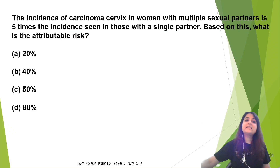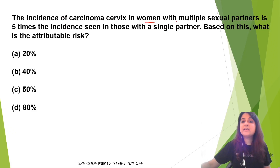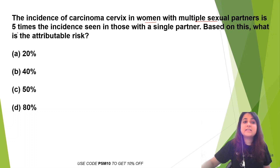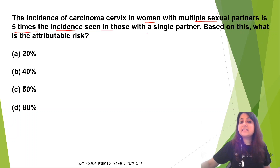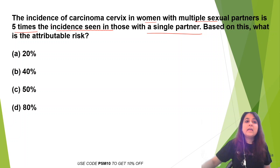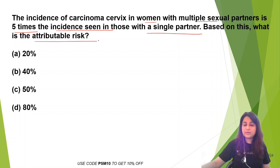The question today is: incidence of carcinoma cervix in women with multiple sexual partners is 5 times the incidence seen in those with a single partner. Based on this, what is attributable risk?